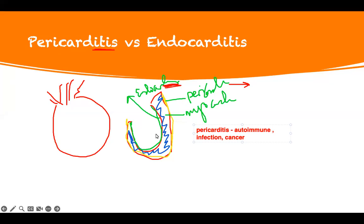Endocarditis is usually something coming to the heart through the blood — it's being transmitted, so mostly it's an infectious problem, but it can also be autoimmune. Infections like bacteremia — somebody had infection in their skin, it goes into the blood. This is why we treat every infection to prevent it going into your blood. When it gets into your blood, it goes into the heart and the valves get affected, involving the layer of the heart. That's the main idea of the problem.